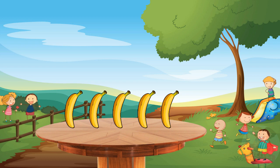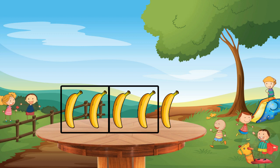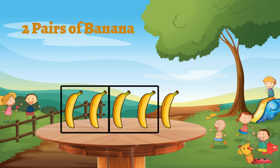We take banana as an example. First pair. Second pair. Two pairs of banana with one banana left. So it's odd.